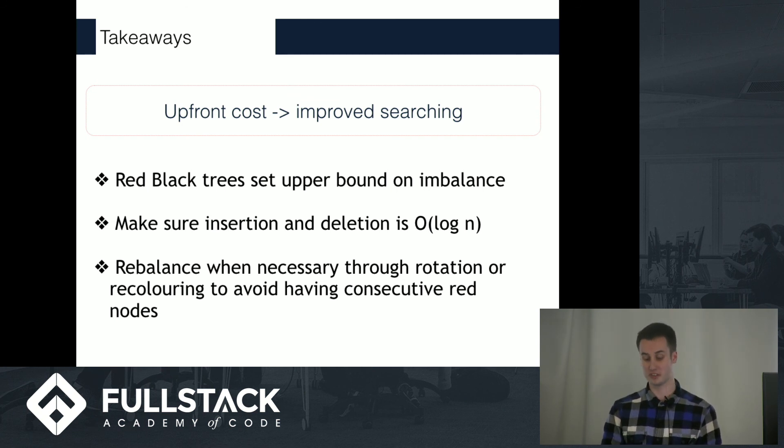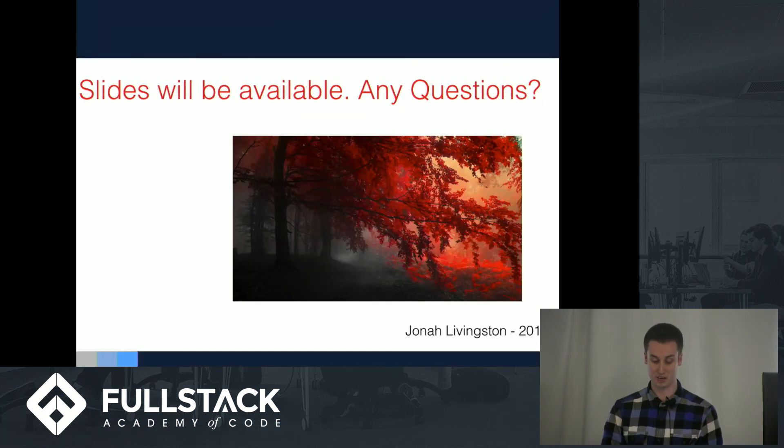They rely on rebalancing when necessary through rotation or recoloring to avoid consecutive red nodes. I think it's also important to know that one of the advantages of a red-black tree is that of the several rules, we only have to look at the consecutive red nodes. We don't have to constantly be counting black nodes, so that's a big advantage. The slides will be available, and let me know if you have any questions. Thank you.